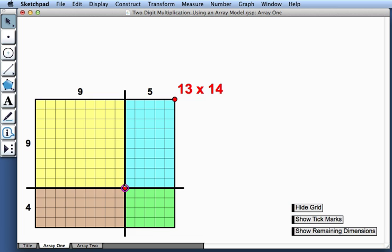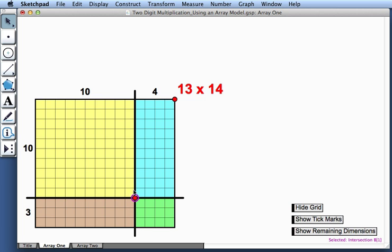So can I use these four smaller arrays to help me figure out the product of 13 and 14? Well, in this position here, I've arranged the four smaller arrays to have products that are easy to calculate.